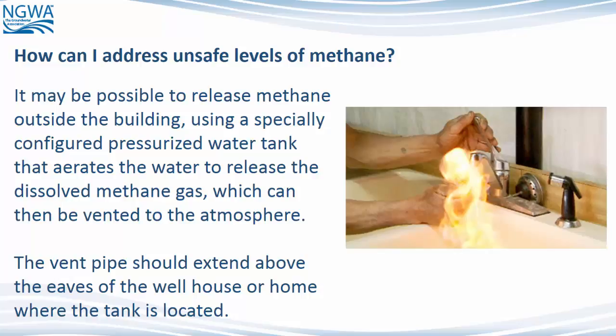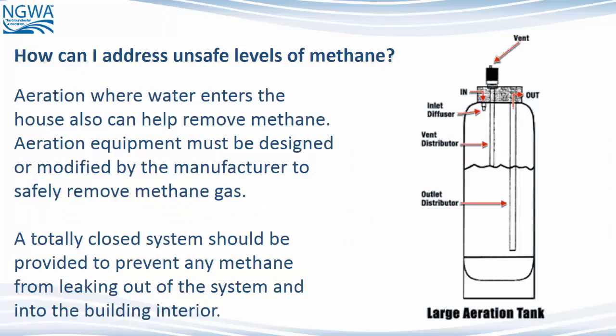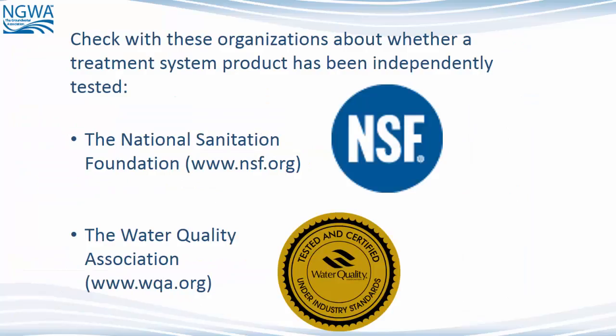The vent pipe should extend above the eaves of the well house or home where the tank is located. Aeration where water enters the house also can help remove methane. Aeration equipment must be designed or modified by the manufacturer to safely remove methane gas. A totally closed system should be provided to prevent any methane from leaking out of the system and into the building interior. Check with the National Sanitation Foundation at www.nsf.org and the Water Quality Association at www.wqa.org about whether a treatment system product has been independently tested.